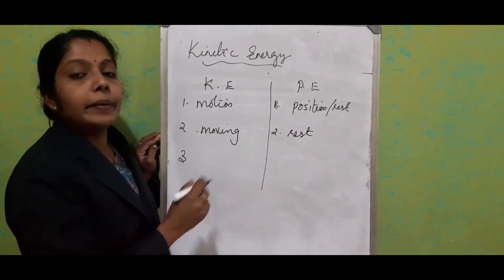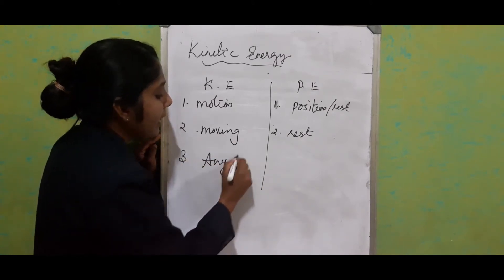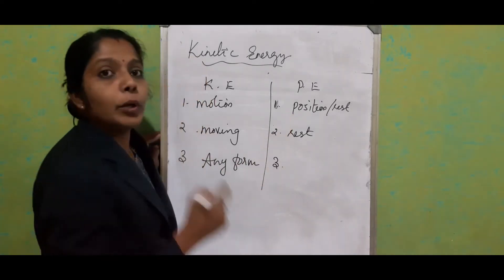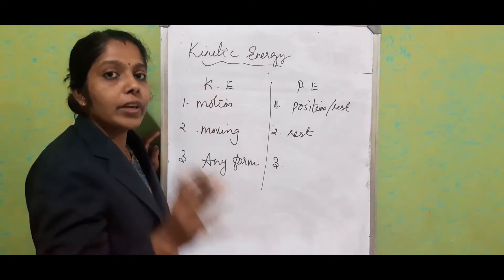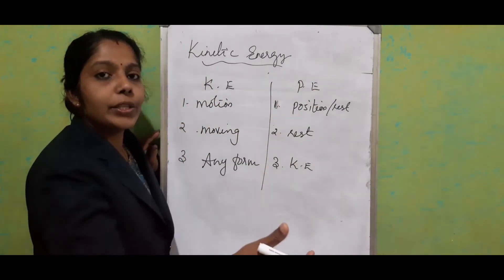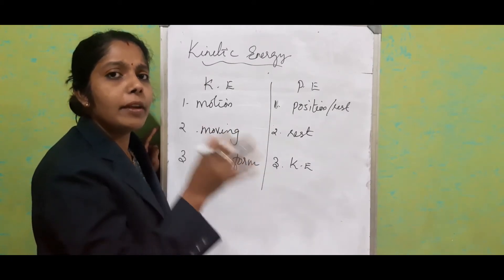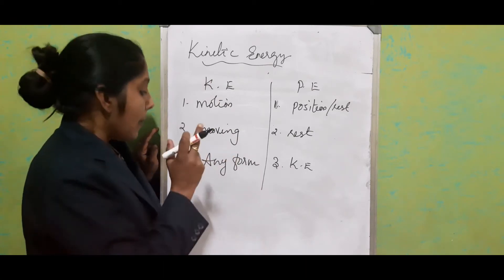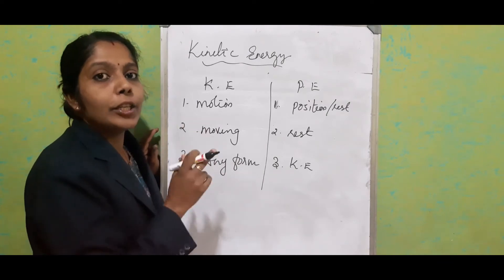The third important difference: kinetic energy can be converted into any form of energy. But for potential energy, it can only first be converted into kinetic energy — after becoming kinetic energy, it can then convert into another form. So potential energy must first convert to kinetic energy; no other direct conversion is possible. But kinetic energy can be converted into any form.